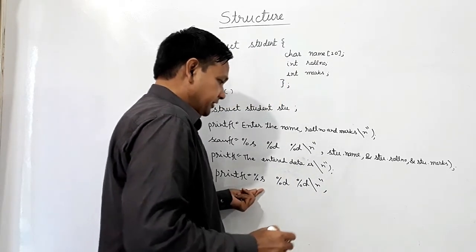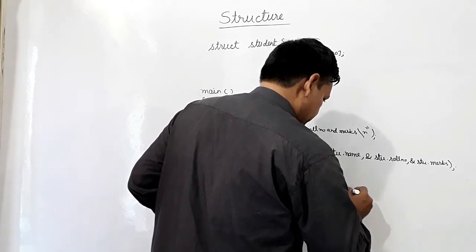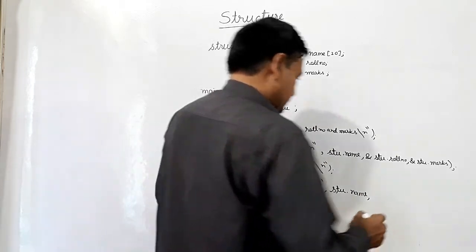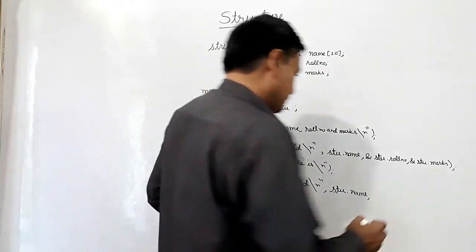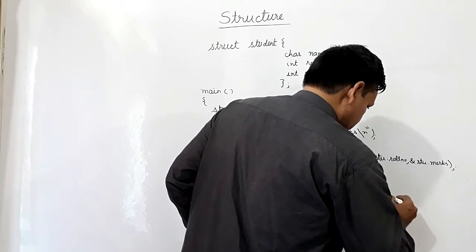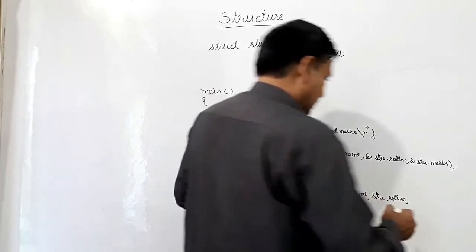This is string, so I will use stu dot name. This is role number which is integer, so I will use stu dot role number. Here, marks.